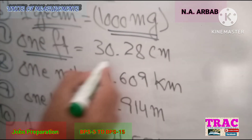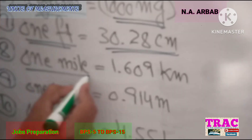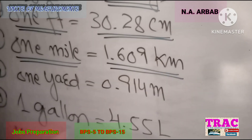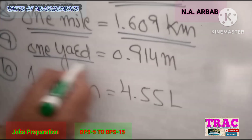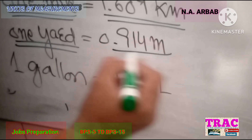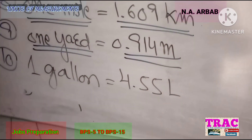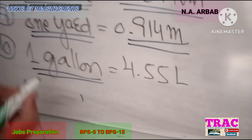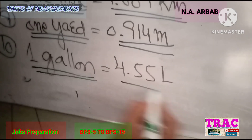Number 7: 1 foot is equal to 30.28 cm. Number 8: 1 mile is equal to 1.609 km. Number 9: 1 yard is equal to 0.914 meter. Number 10: 1 gallon of water is equal to 4.55 liters.